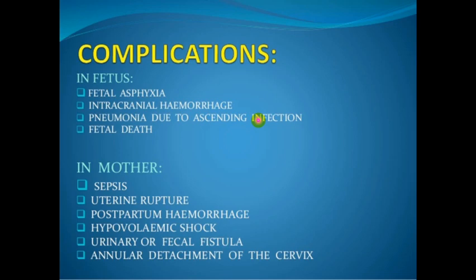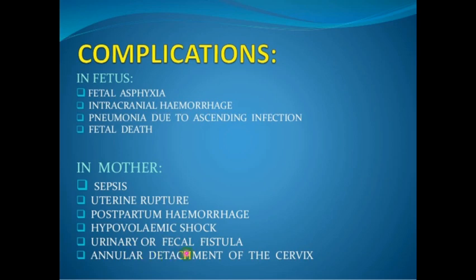Complications of obstructed labor for the fetus include risk of fetal asphyxia, intracranial hemorrhage, pneumonia due to ascending infection, and fetal death. For the mother, there is risk of postpartum infection, uterine rupture, postpartum hemorrhage due to uterine atony from prolonged labor, hypovolemic shock, and urinary or fecal fistula due to tissue necrosis. There may also be annular detachment of the cervix.